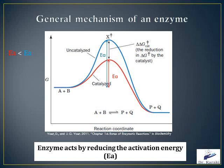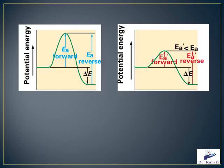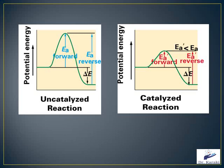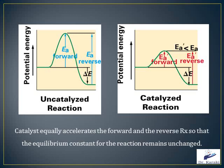Now let's take a look at these graphs and compare them. On the graph on the right, the activation energy of the forward and reverse reaction are lower than that shown on the left, which means the graph on the right corresponds to a catalyzed reaction while the one on the left corresponds to an uncatalyzed reaction. Catalysts equally accelerate the forward and the reverse reaction, so the equilibrium constant for the reaction remains unchanged.